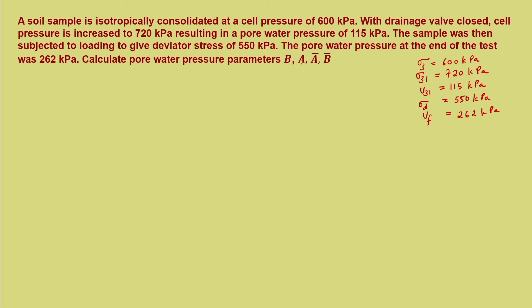We are asked to determine the pore pressure parameters B, A, A-bar, and B-bar. This is what we do in the laboratory — for a given soil at a given depth, we find the pore pressure parameters using triaxial testing. These parameter values can be used for numerical modeling. When I say parameters, I am mostly associating it to parameter A, because for B, if the soil is saturated we know it is 1, and for partial saturation we know the B value accordingly.